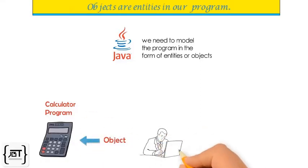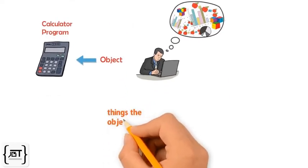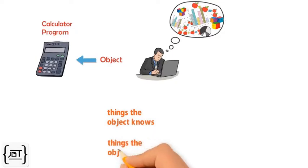When we think about objects, we need to think about two things. Things the object knows. Things the object does.